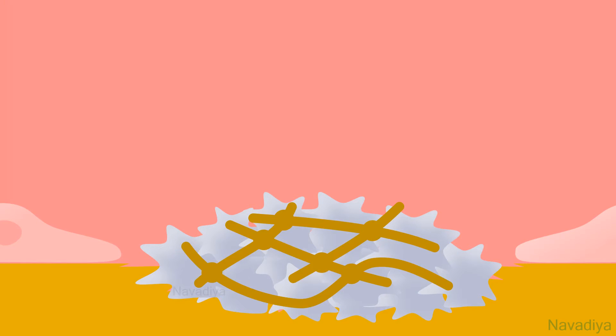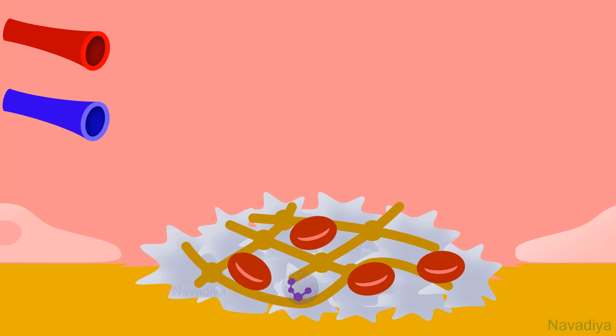Coagulation converts the primary platelet plug into a definitive clot. Apart from platelets, other blood cells like red blood cells and white blood cells also get trapped when the clot is being formed. Composition of the clot varies depending on where it is formed. Arterial clots have high proportion of platelets whereas venous clots have high proportion of fibrin.